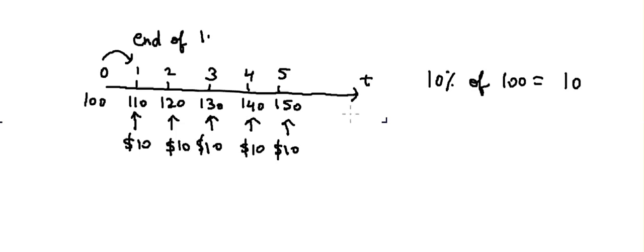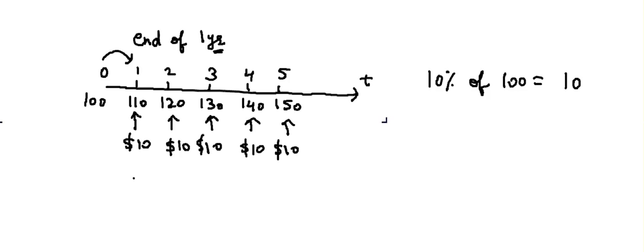Remember that these values represent the end of each year — so $110 is the end of year one, not the start. You receive the interest at the end of the year, and similarly $120 is the end of year two. That's the basic idea of simple interest.